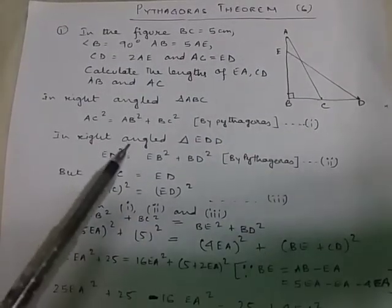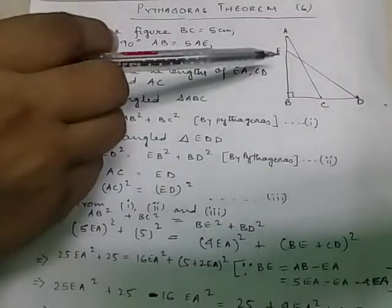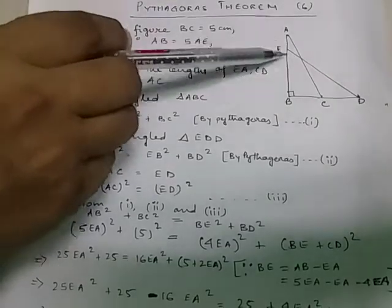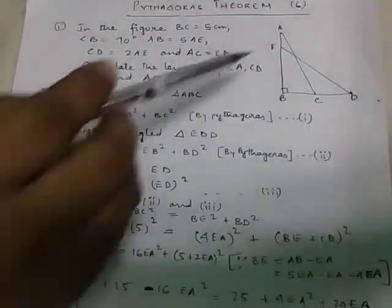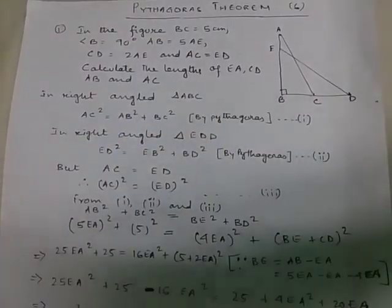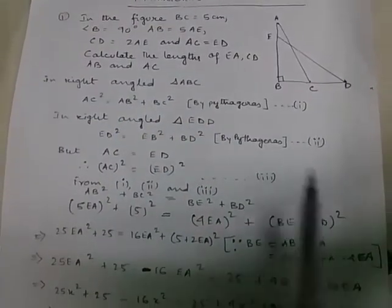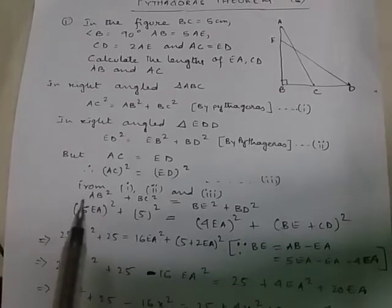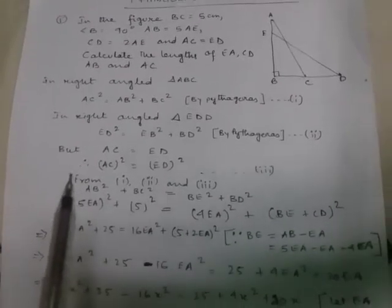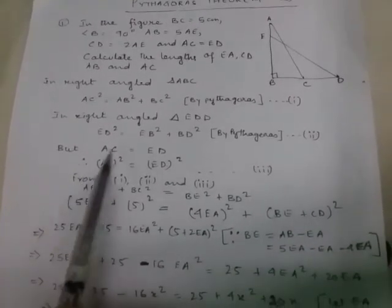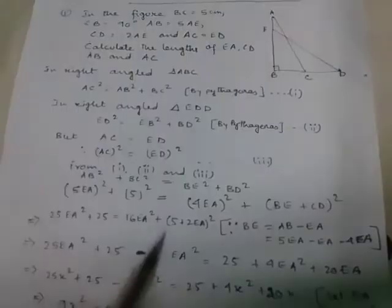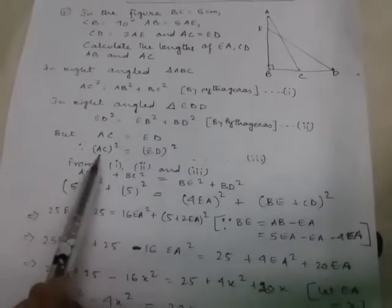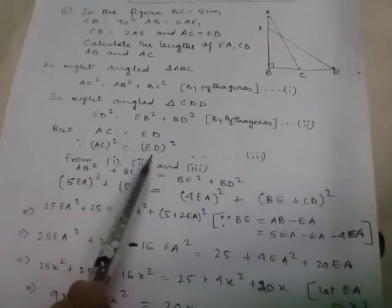Now, let us consider the next triangle, EBD. In this, ED² equals EB² plus BD² by Pythagoras. But AC equals ED. Therefore, AC² equals ED². This is equation number 3.